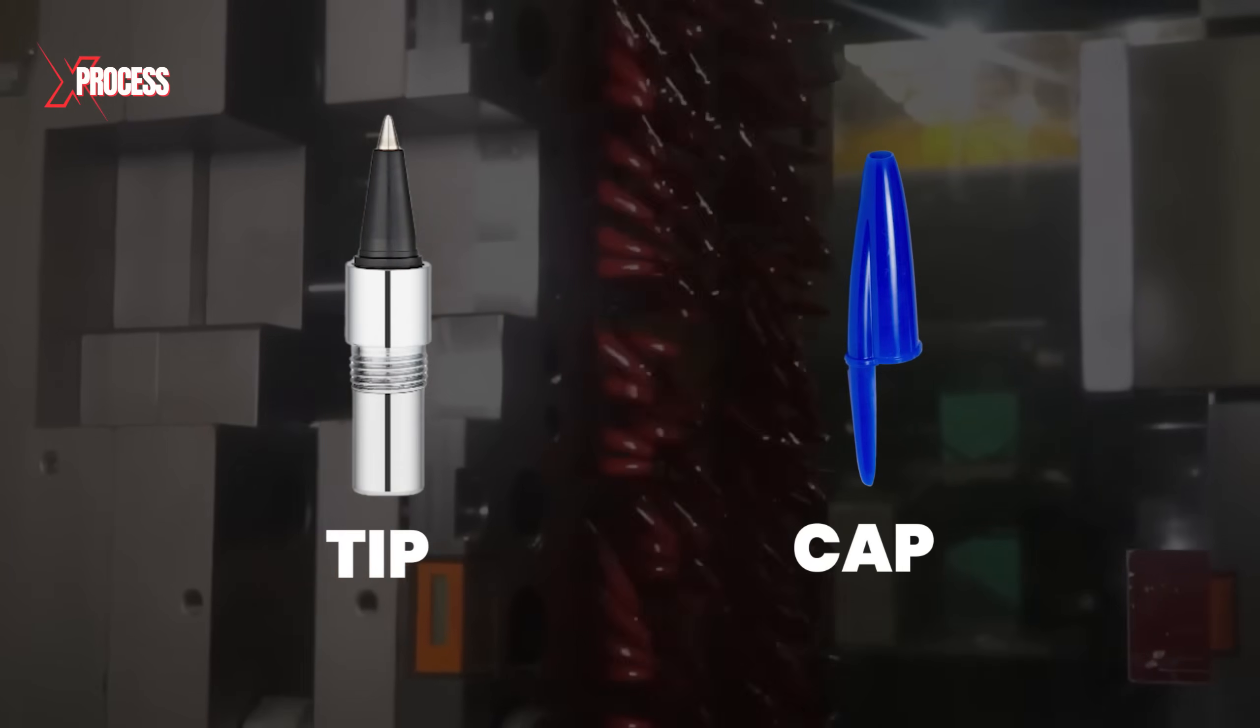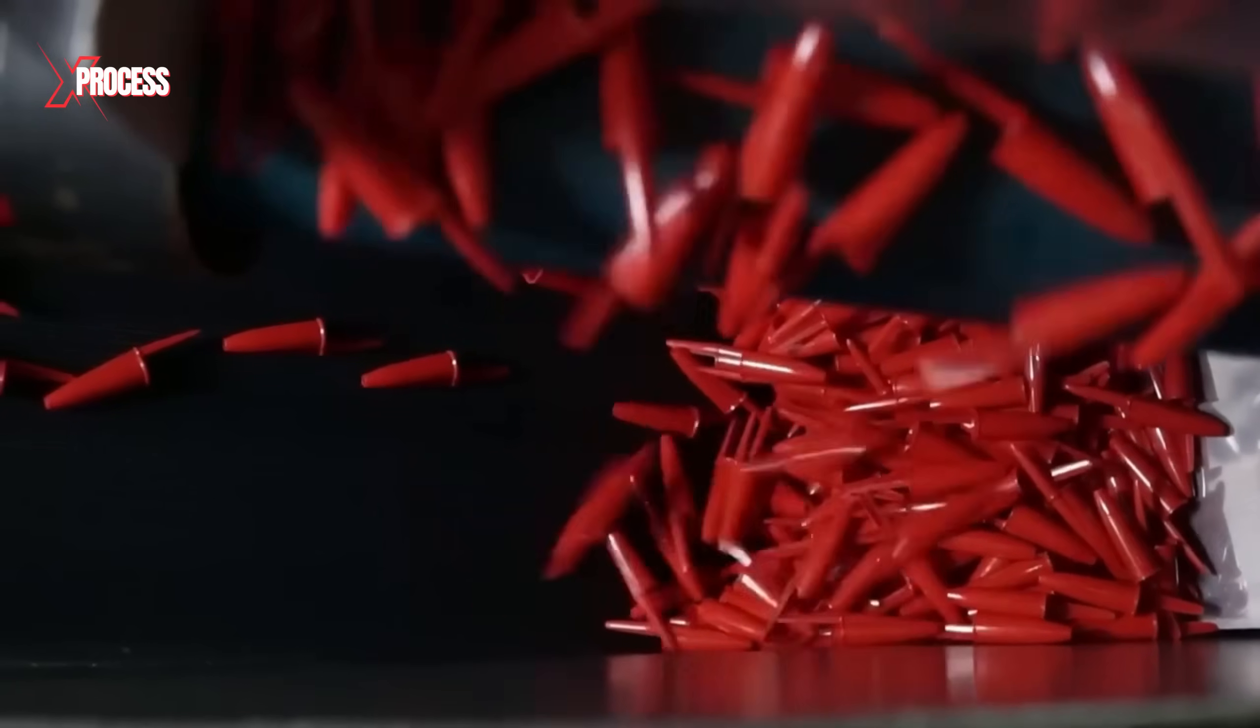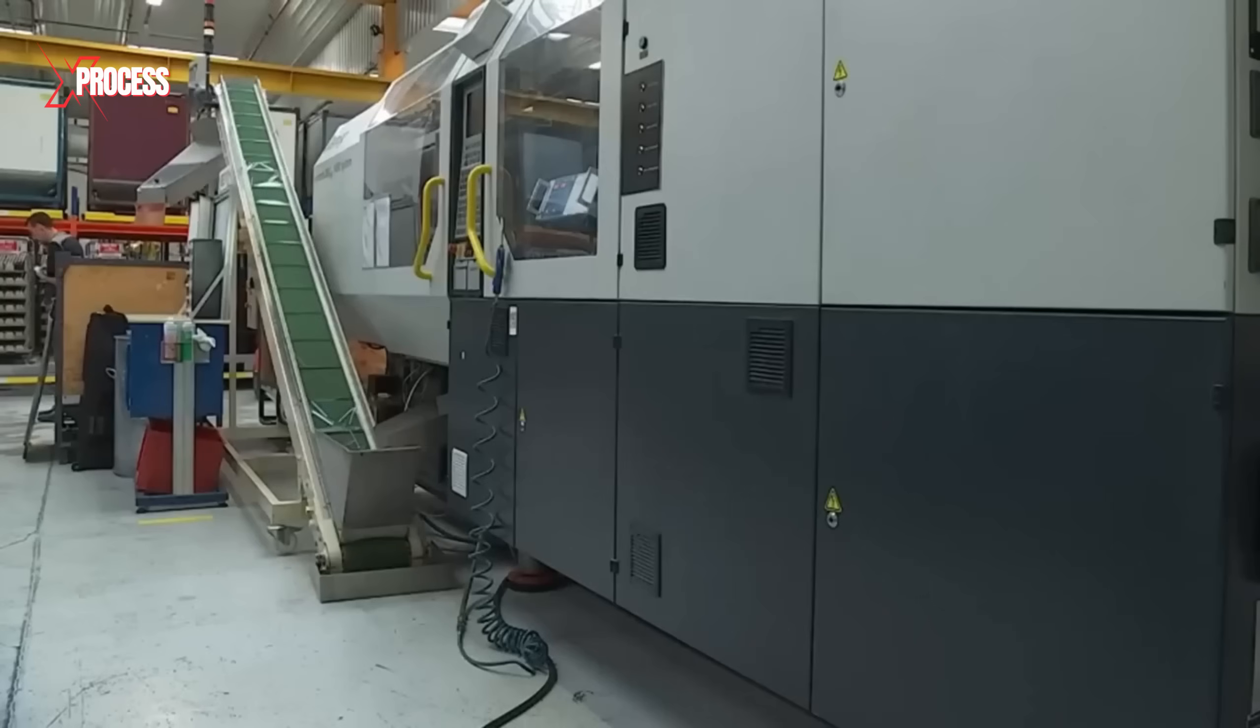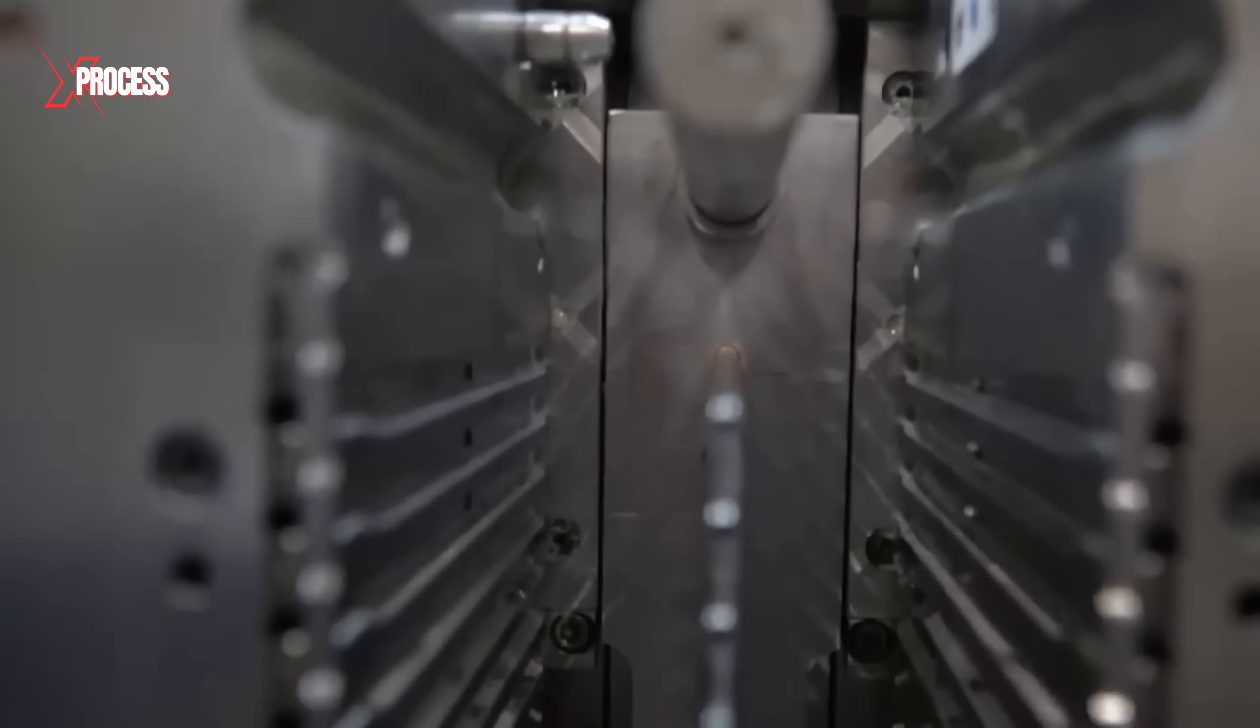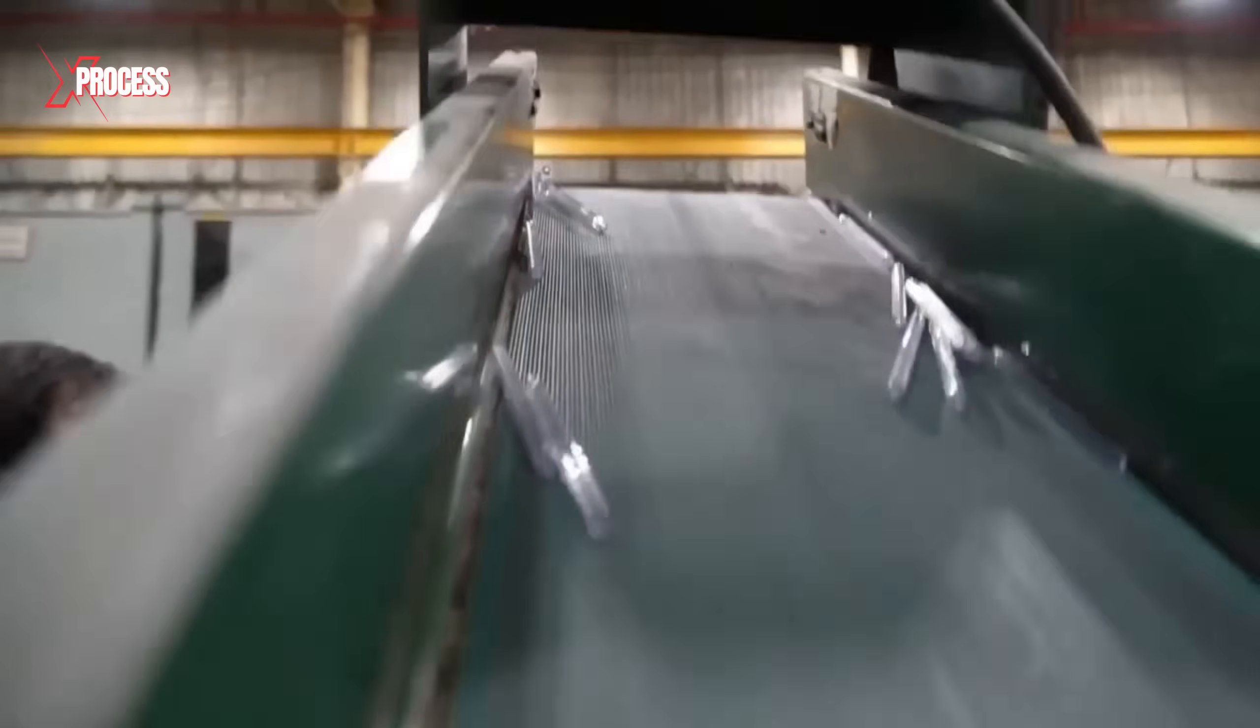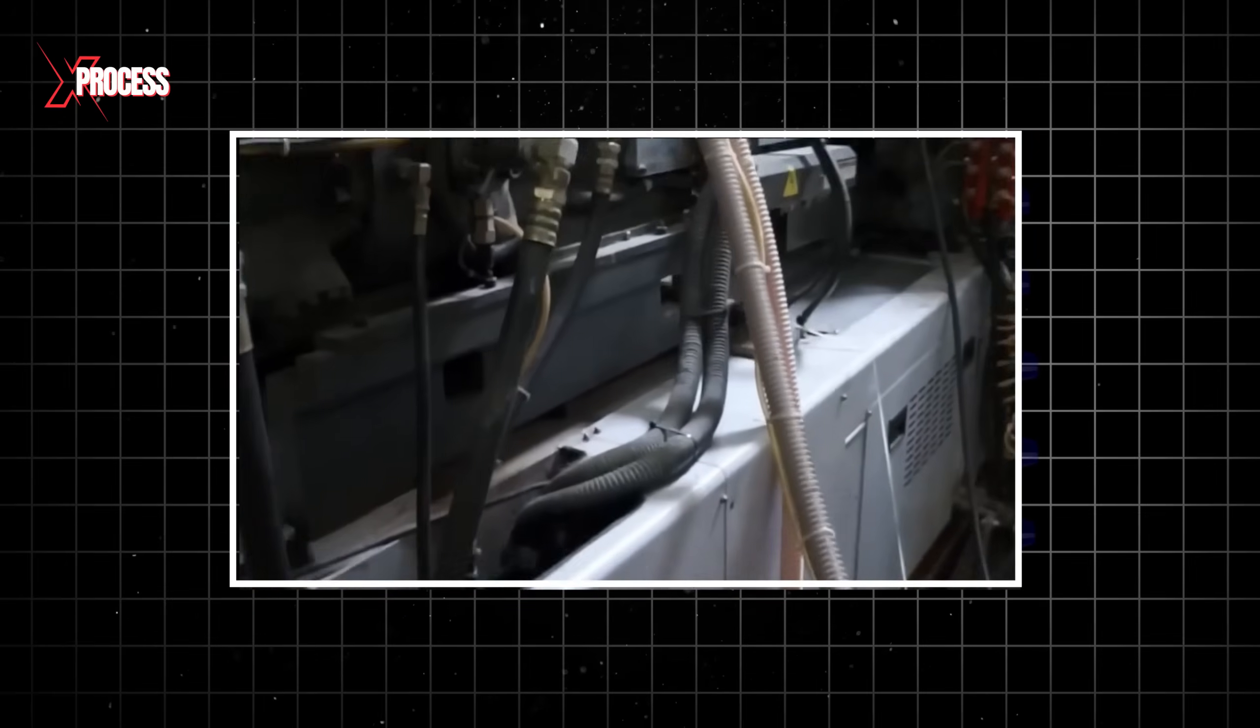Similarly, the cap and tip of the pen undergo formation through injection molding, an industrial process where plastic molding is achieved by the continuous application of pressure and push. This is achieved by extruding molten polymer through a hole, resulting in a cross section identical to the shape of the hole. Subsequently, the excess material is trimmed to the desired size. This entire process is facilitated by an extruder machine, which can melt plastic material and then dispense it through a nozzle at a consistent rate.